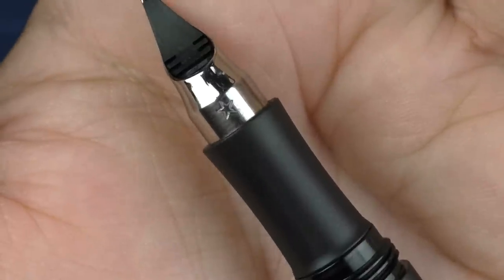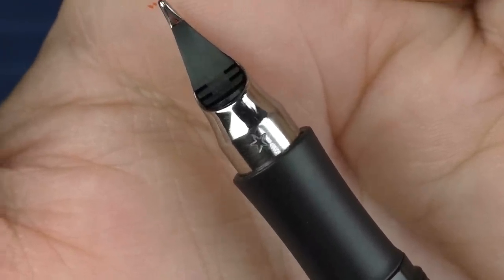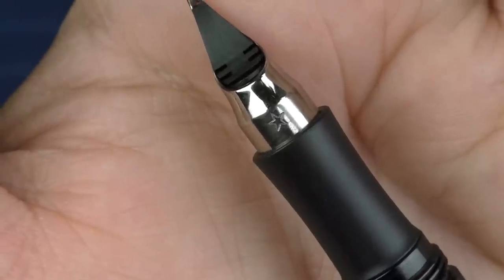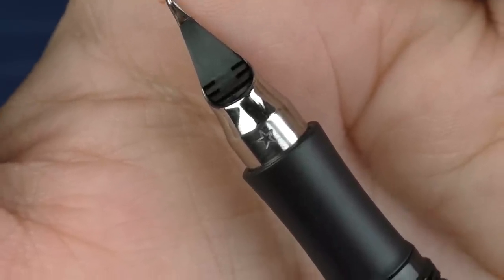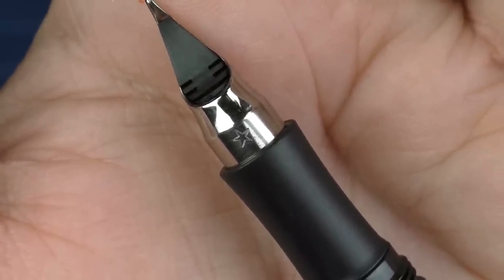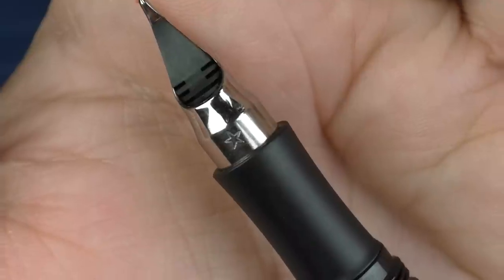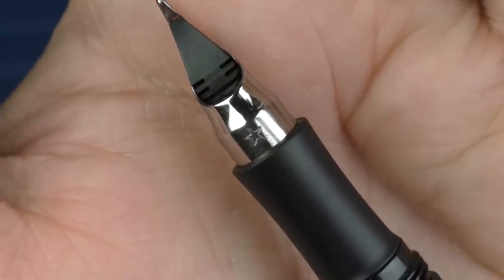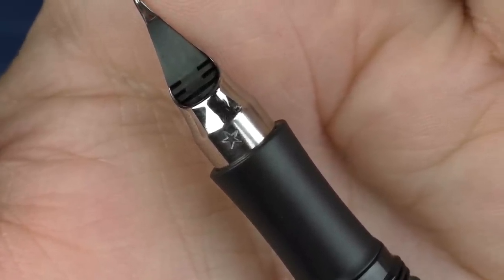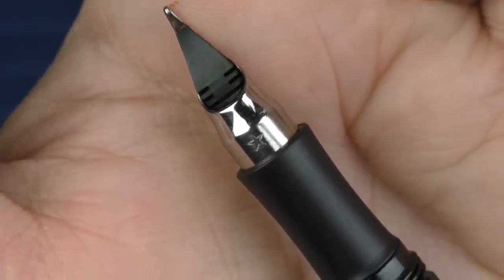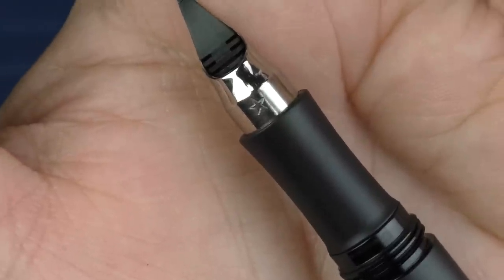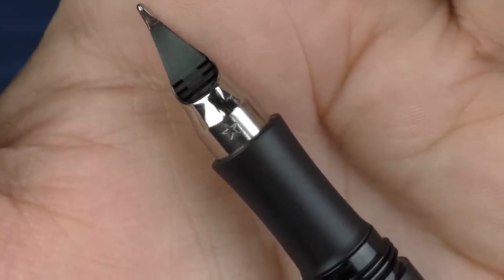Then on the back side here, there is this star. This is a glyph similar to what you saw on the cap, except all nibs in this first batch, which have been produced over the last several months, will have a star. When the next generation of the nib is produced, it'll have a different glyph. So you'll know that this is essentially a first edition nib.